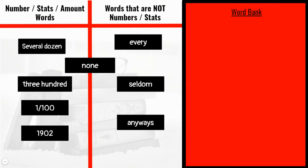Be sure to update your answers. Notice that we put the word 'none' in the middle, because some would argue that 'none' represents the number zero, while others may not agree. We also need to notice that numbers can be written in word form, and when this occurs, we still need to stop, notice, and note, even in word form or any sort of number or amount. Fractions and dates also count as numbers, no matter how small or how big they are.